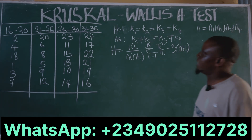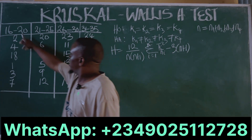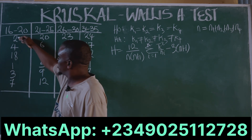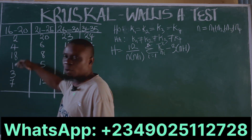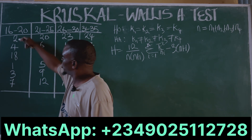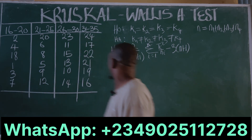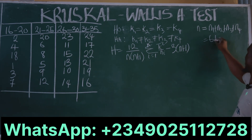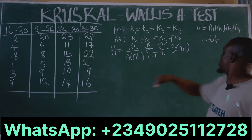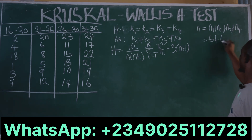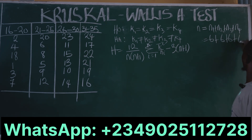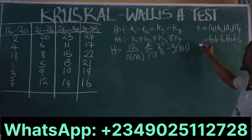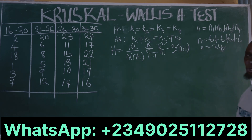N1 is the number of observations in group 1, which is 6. N2 is also 6, N3 is 6, and N4 is also 6. Therefore, our total N is equal to 24.